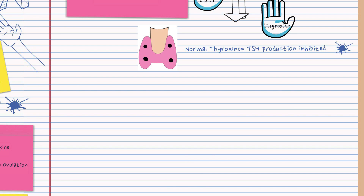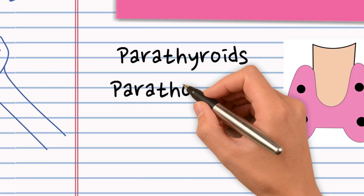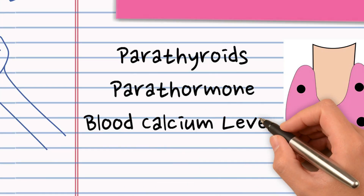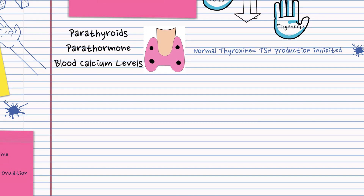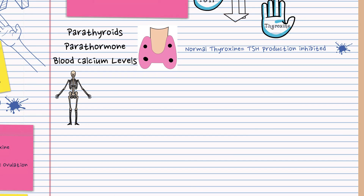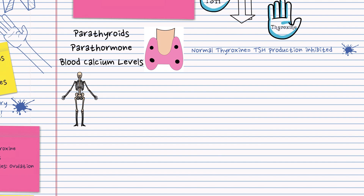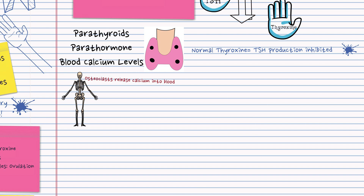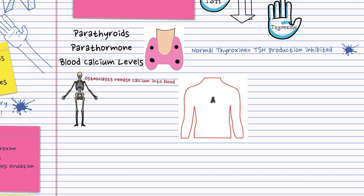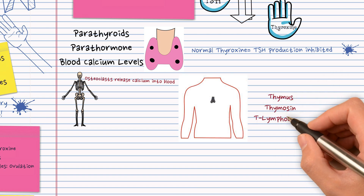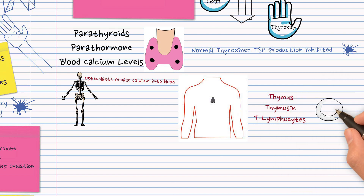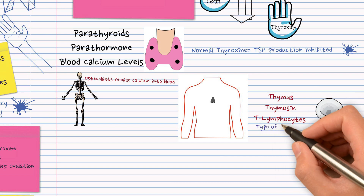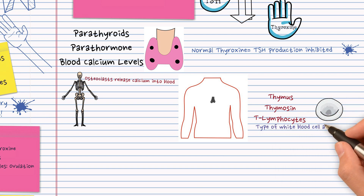The two hands on the back of your thyroid gland are four other little glands known as the parathyroids. They produce the hormone parathormone, which controls blood calcium levels by stimulating osteoclast bone cells to release calcium into the blood. Located behind your sternum is the thymus, which produces thymocin — this activates T lymphocytes, white blood cells.